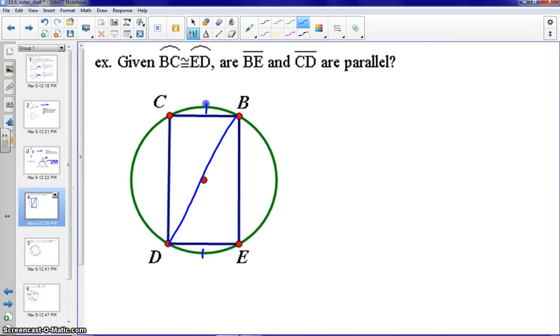Okay, so if I draw a diagonal B to D, this gives me a couple inscribed angles. That would give me an inscribed angle at CDB that would be congruent to the inscribed angle DBE because these arcs are going to be the same measure. Therefore, the inscribed angles would be the same measure. So we just showed alternate interior angles are congruent.